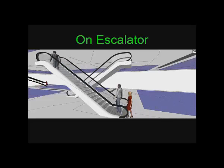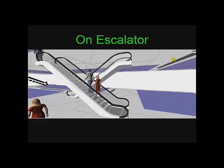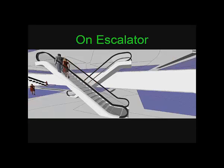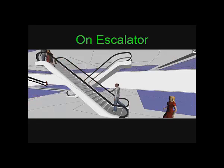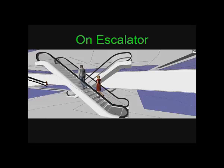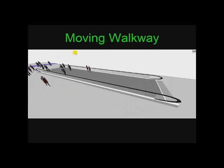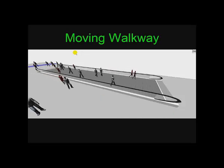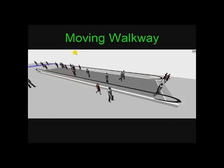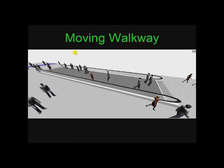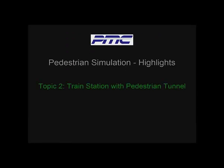Note the detailed 3D animation of the steps forming near the bottom and moving up. Some people are moving up to shop on the next level while others are shopping on the bottom level. Pedestrians can also move on moving walkways — note that some people are taking the walkway while others are walking on the surrounding floor. Our second topic shows a full model of a train station with a pedestrian tunnel.